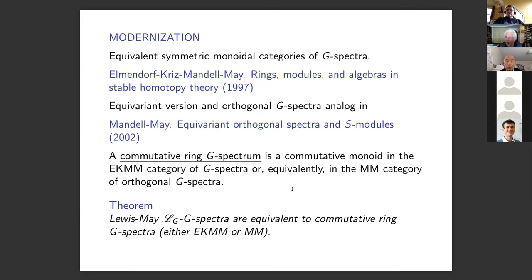In slightly more modern context: there are equivalent symmetric monoidal categories of G-spectra — EKMM from 1997, its equivariant version, and orthogonal G-spectra — all giving symmetric monoidal categories with smash product. A commutative ring G-spectrum in the modern sense is a commutative monoid in such a category. Lewis-May E-infinity G-spectra are equivalent to commutative ring spectra — that's how EKMM evolved — and structures in EKMM or orthogonal spectra can be used interchangeably even with multiplicative structure.